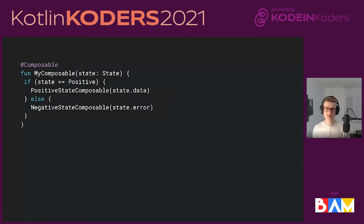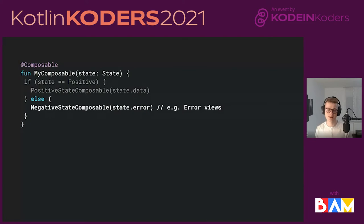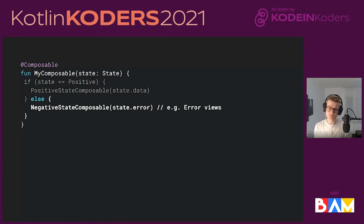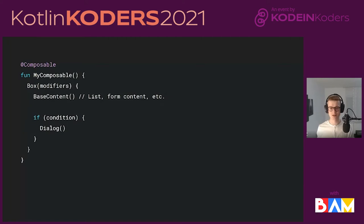If you have a Composable function called MyComposable with some state, that state can be two types — a positive type or a negative type with some error or other value. We check what type of state we have and show different UI accordingly. For the positive state, we might show a list of items or user information. If we have the negative state — for example, we failed to fetch from the server — we can show an error view. You give the Composable some state, some conditions, and it shows different types of UI.